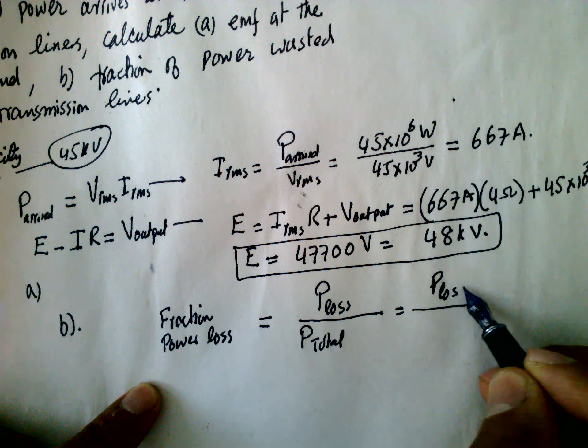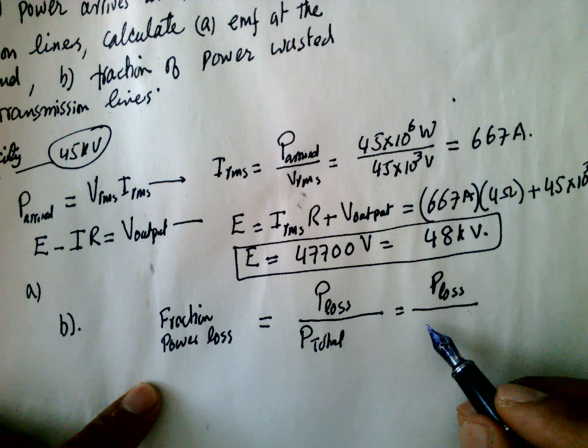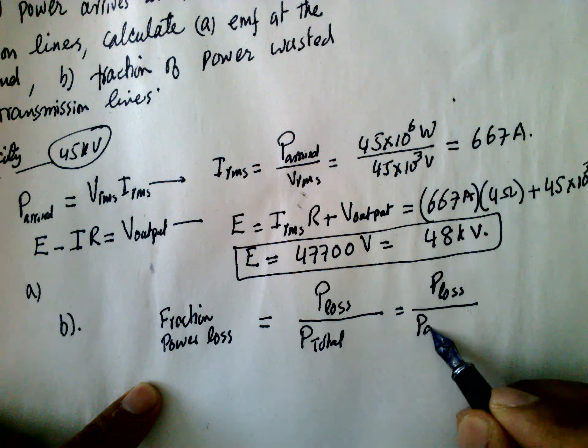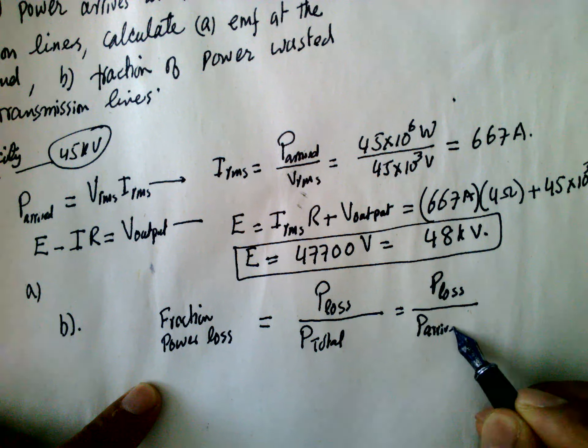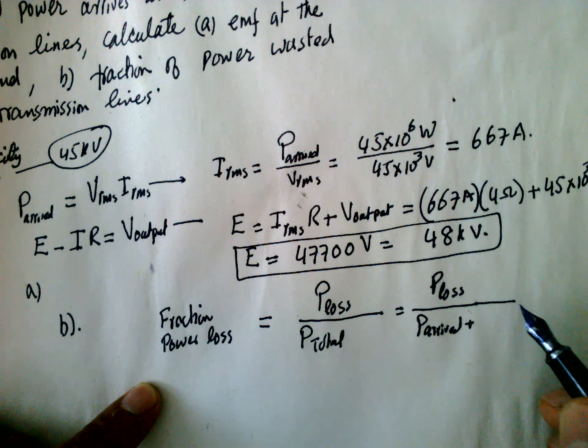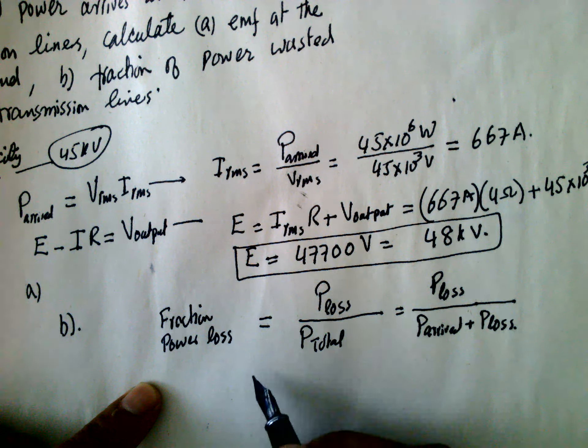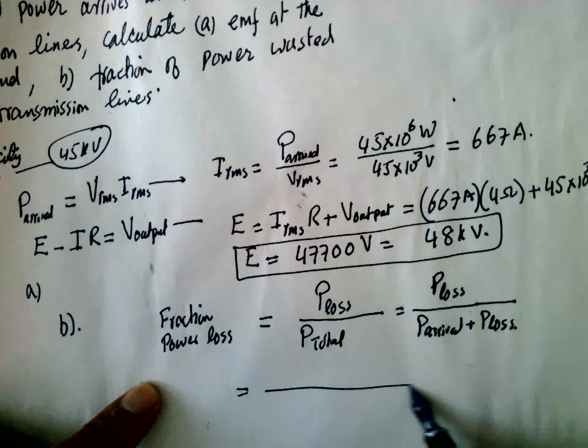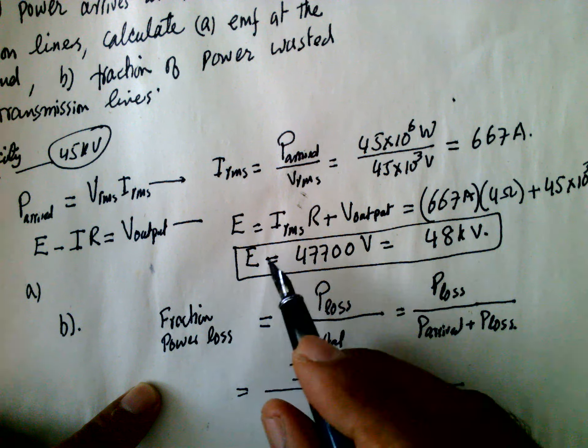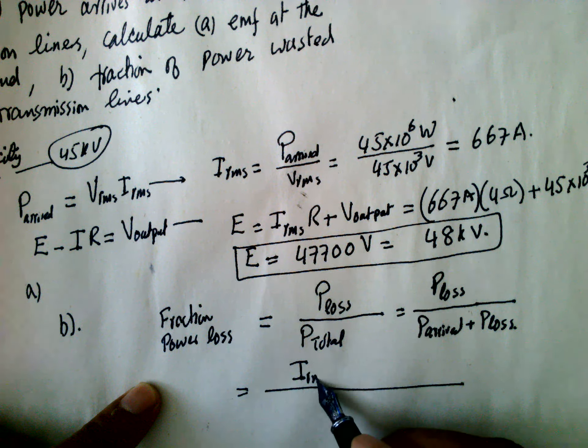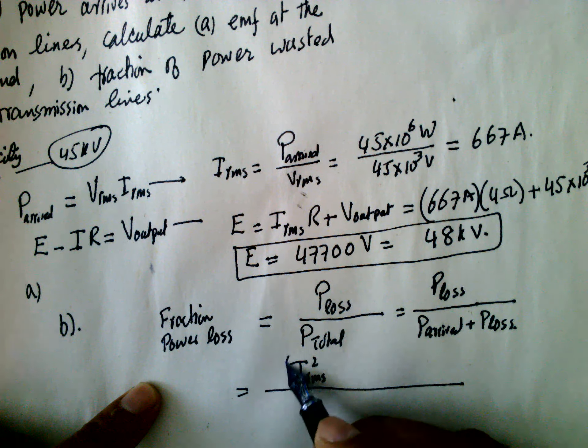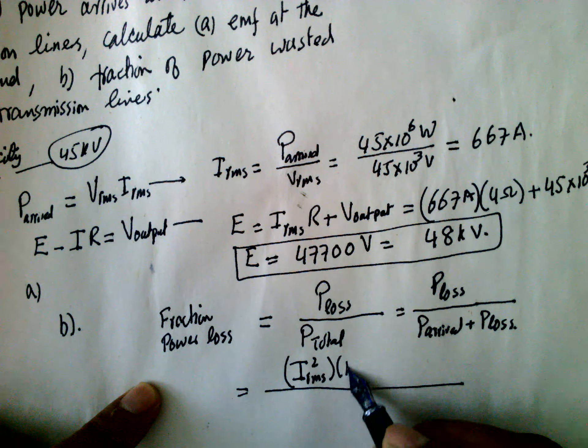So power loss is equal to power which arrived plus loss. And power loss is I_rms squared into R.